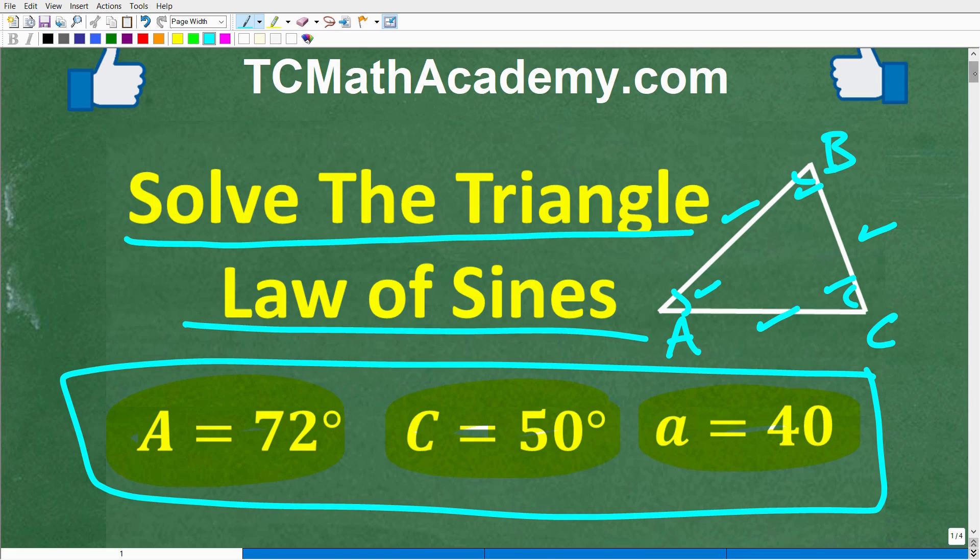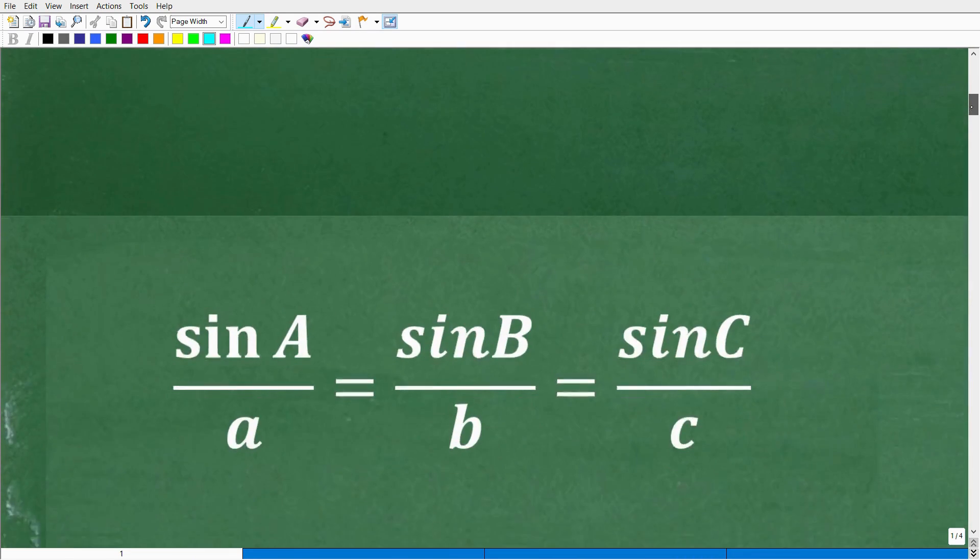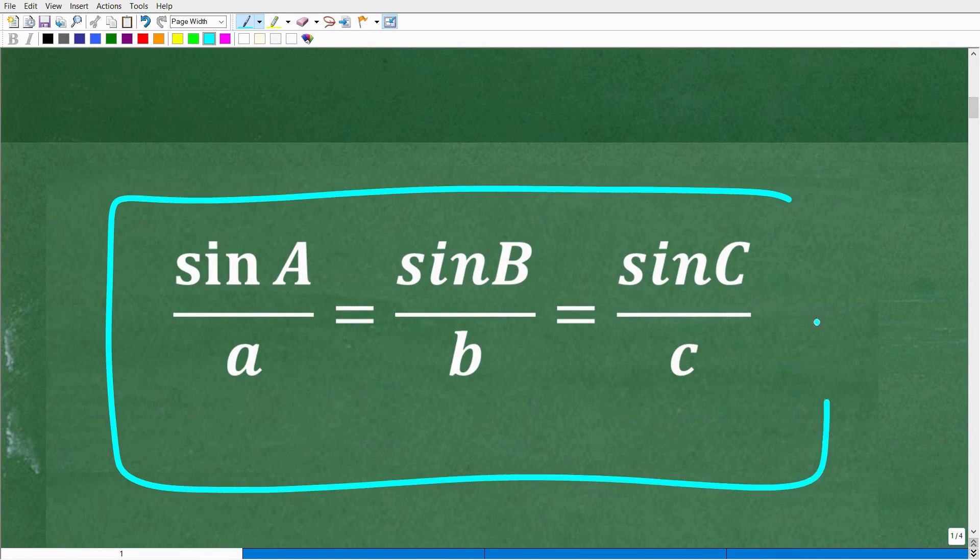Matter of fact, let me show you the law of sines here. So this is the law of sines. Sine A over a is equal to sine B over b is equal to sine C over c.